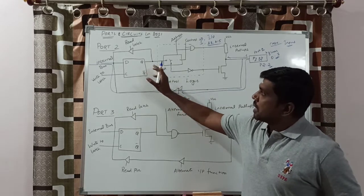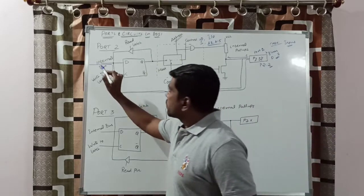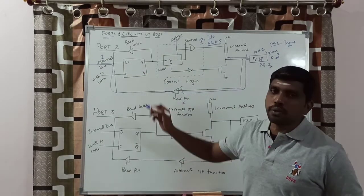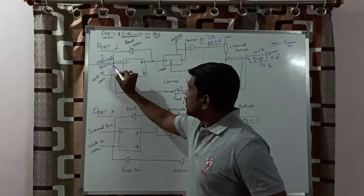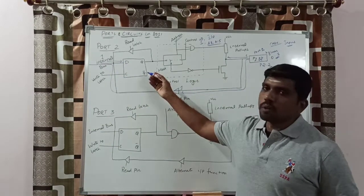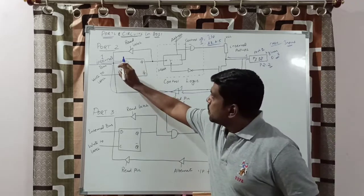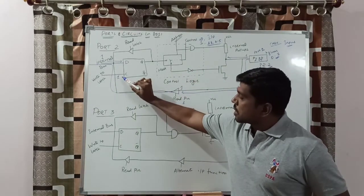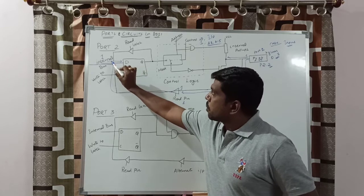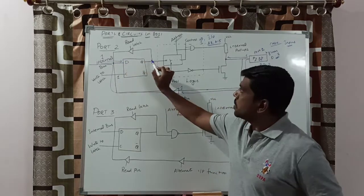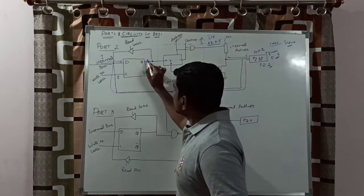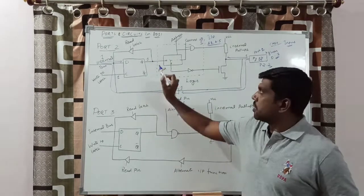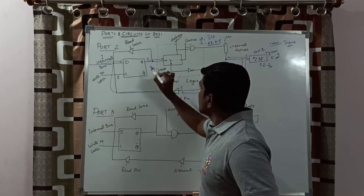Suppose port 2 carries the output signal. After execution by the microcontroller, the pin value is 1. Let us consider the internal bus value equal to 1. This 1 is transferred to the input of the D flip-flop. The property of the D flip-flop is that the input value equals the output value when the clock signal is equal to 1. So when the clock signal is 1, whatever value is at the input of the D flip-flop, the same value propagates to the output side. Here, the Q value is 1.